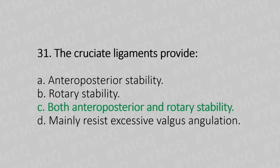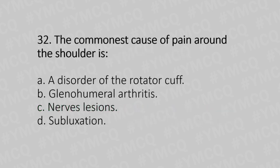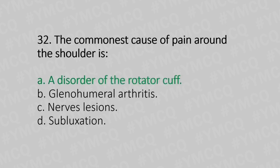Now let's move to question number 32. The commonest cause of pain around the shoulder is. Option A: a disorder of the rotator cuff. Option B: glenohumeral arthritis. Option C: nerve lesion. Option D: subluxation. And the answer is Option A, a disorder of the rotator cuff.